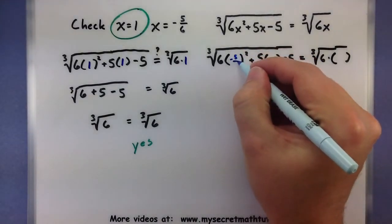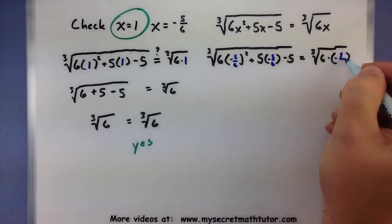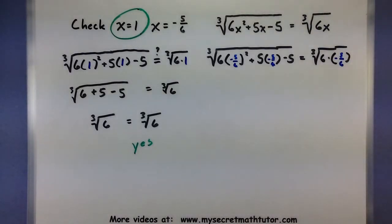So negative 5 sixths, negative 5 sixths, and negative 5 sixths. Okay, so we do have to work with fractions a little bit, but fortunately I don't think this will be too bad.